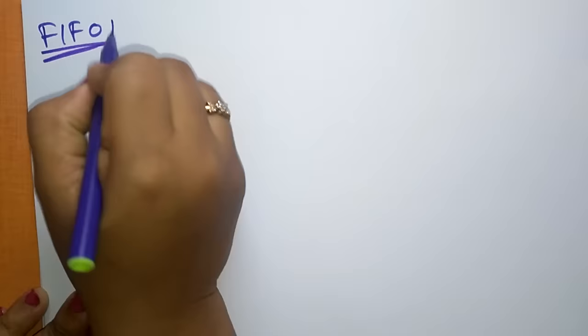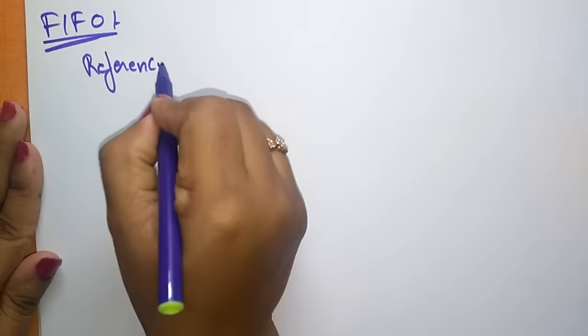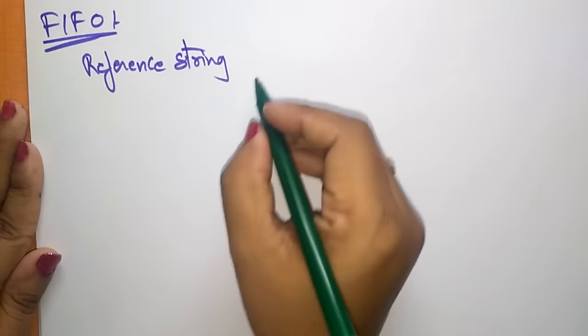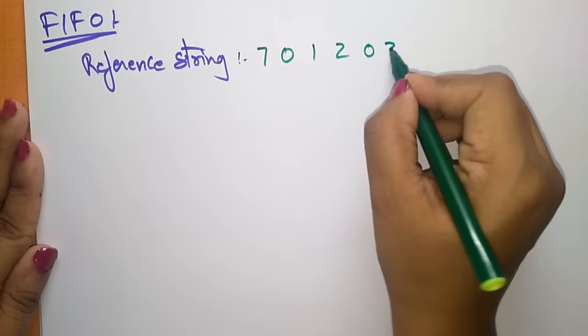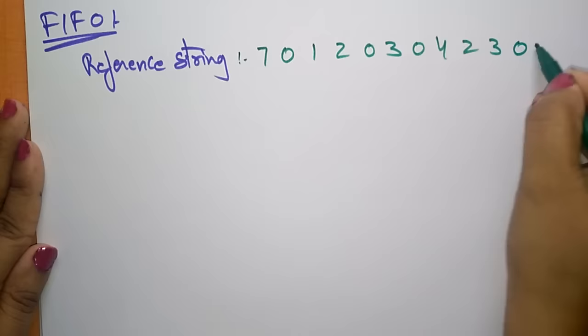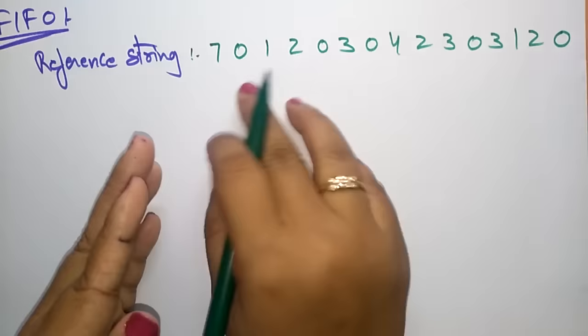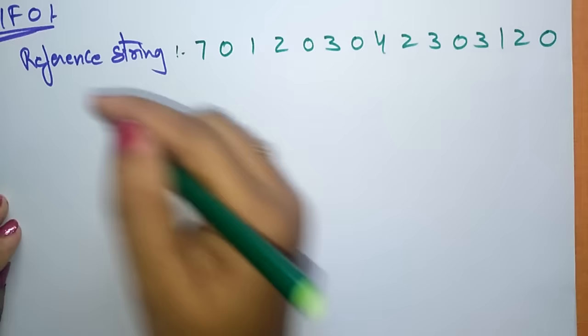I'm taking a reference string: 7, 0, 1, 2, 0, 3, 0, 4, 2, 3, 0, 3, 1, 2, 0. These are the pages present in the process. These are the page numbers that the CPU is demanding. Let us take this as process P1, which consists of these pages.